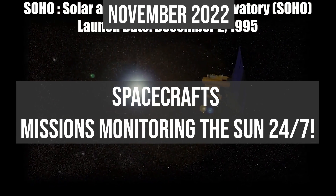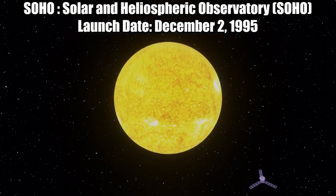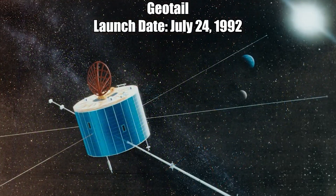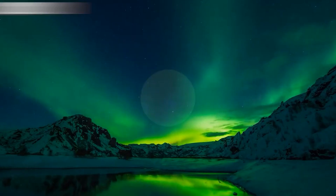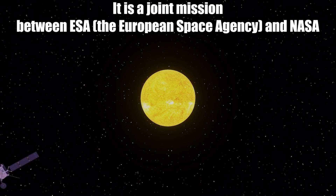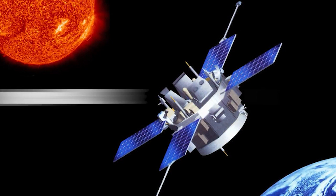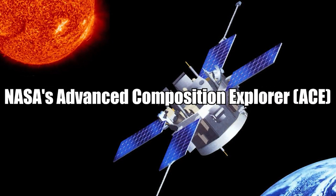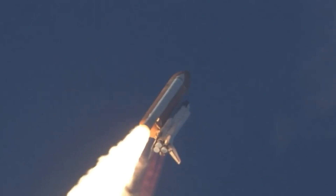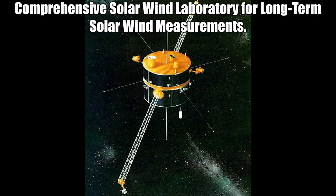SOHO stands for Solar and Heliospheric Observatory — launch date December 2, 1995. Next mission: GeoTail, launch date July 24, 1992. Next mission: Solar Orbiter, launched February 9, 2020, is a joint mission between the European Space Agency and NASA. Other active spacecraft monitoring the Sun include NASA's Advanced Composition Explorer, ACE, and the Wind spacecraft for comprehensive long-term solar wind measurements.